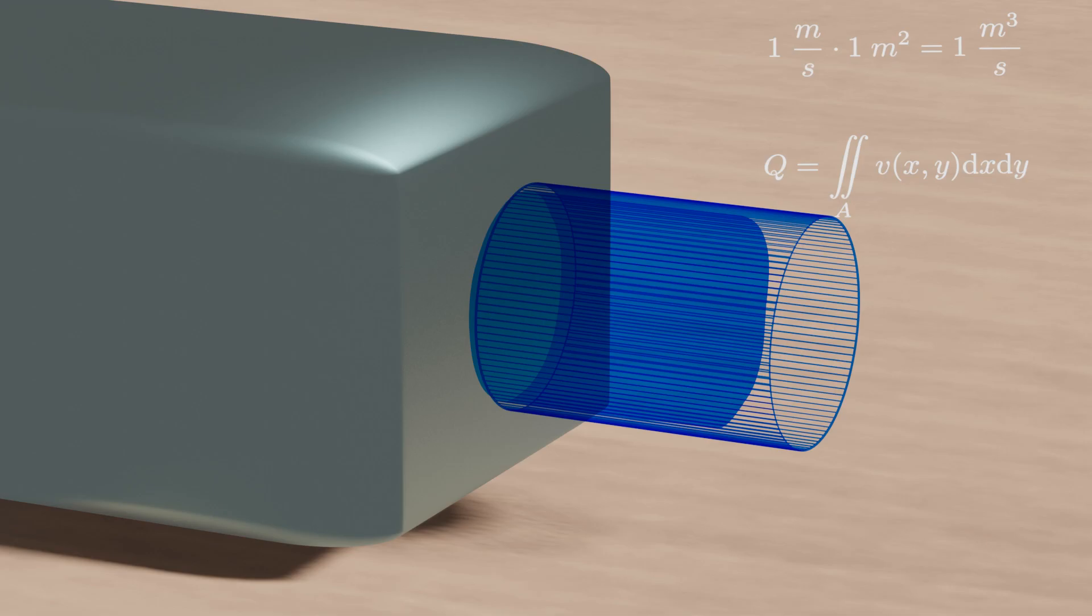If the time of the flow is one second and the fluid passes one meter, then the speed of the fluid is one meter per second. And then, if we multiply speed and cross-section, we will have one cubic meter per second as the flow.